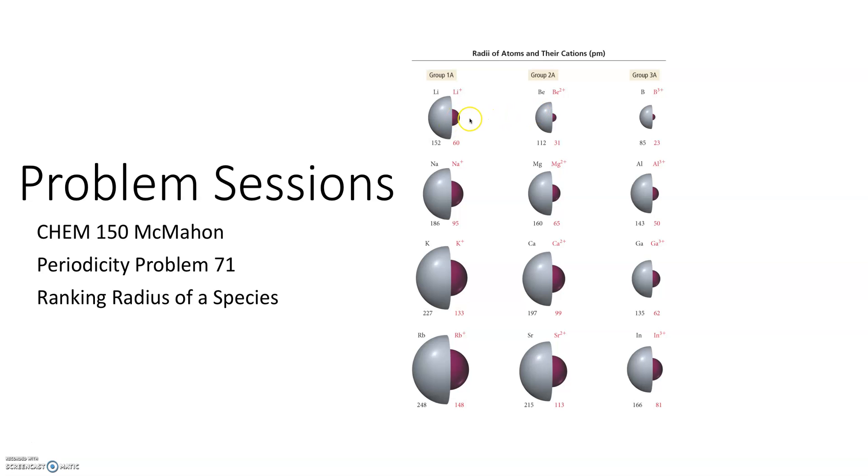It's the same with all cations. The cations are smaller than their parent atoms because they lose this valence shell. And we see that the trend follows similar to atomic radius. As I go down a group the ionic radii is bigger, and as I go from left to right it gets smaller.